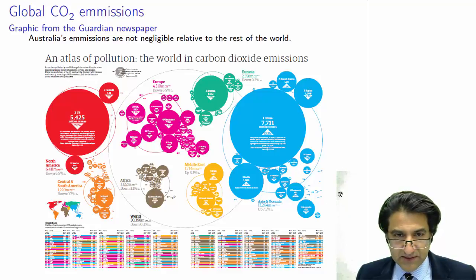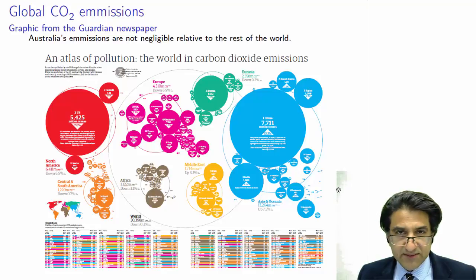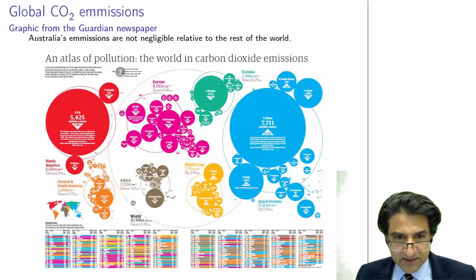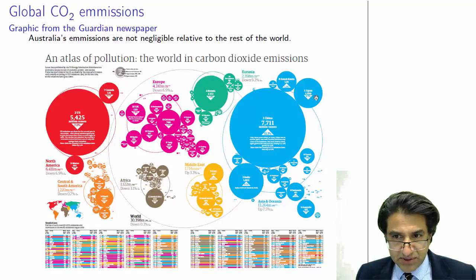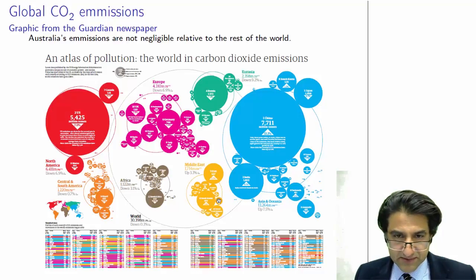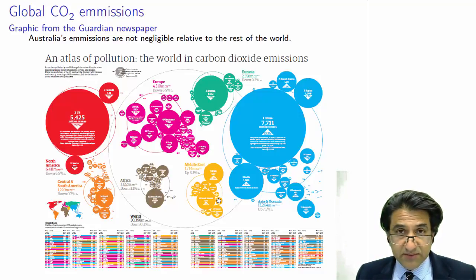Now these are total emissions. In the news it's often stated that Australia has a very small contribution to global warming — well, not really. Look at these small countries here; some of these bubbles are so tiny we can't even see them. But Australia is probably in the group-three set of nations. The two biggest nations, then Russia, India, and Japan — and then pretty close behind, we're in the next group of OECD nations. We are, in absolute terms, not a small CO2 emitter.